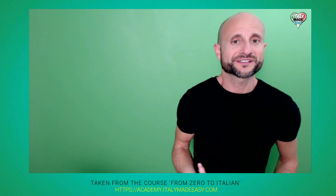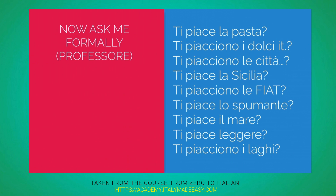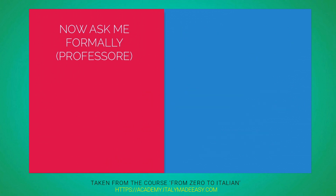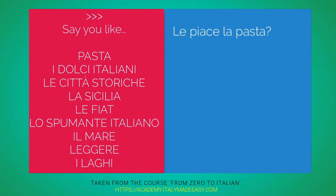So now we're going to ask Manu formally whether he likes those things — something like professore, do you like pasta? When you ask Manu casually you say ti piace la pasta, because that ti means to you, buddy. All we want to do now is say to you, sir, so that ti has to change to le. That's it. Because le means to you, sir, or to you, ma'am. Go back to the indirect pronouns if this is not clear. Le piace la pasta?